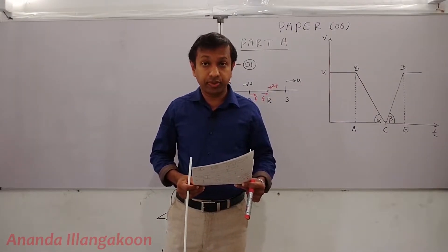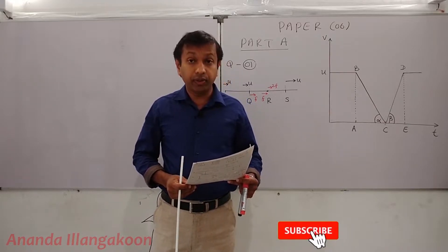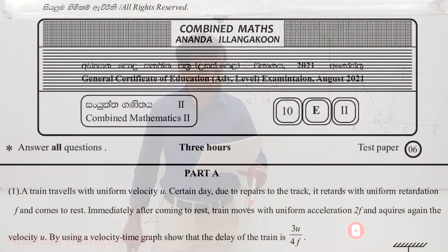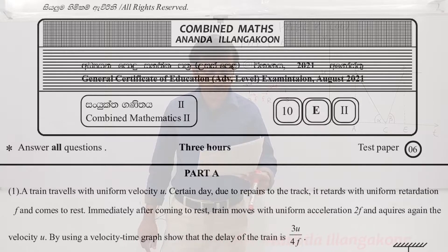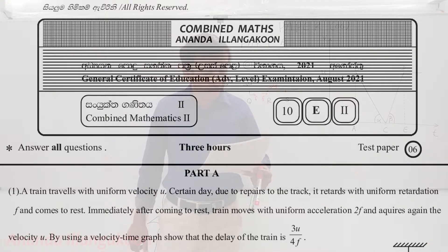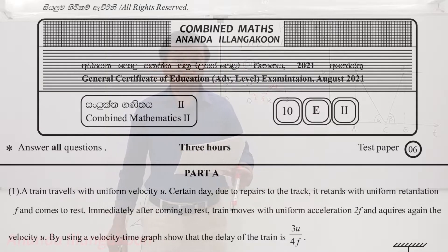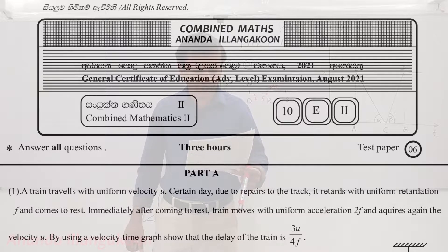Today we will come to paper number 6, part A, question number 1. A train travels with uniform velocity U. On a certain day, due to repairs to the track, it retards with uniform retardation F and comes to rest. Immediately after coming to rest, the train moves with uniform acceleration 2F and regains the velocity U. Using a velocity-time graph, show that the delay of the train is 3U divided by 4F.